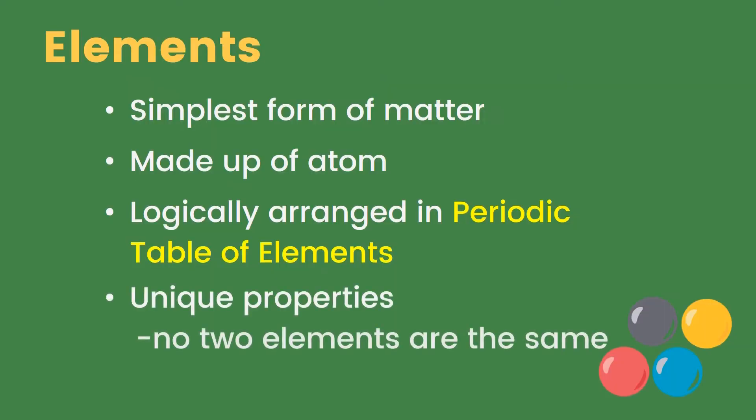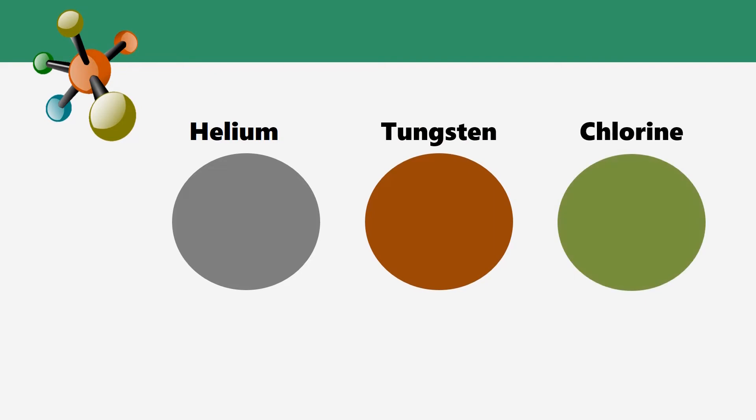Elements have unique properties. No two elements are the same. In these samples of helium, tungsten, and chlorine, each has different boiling point and melting point.